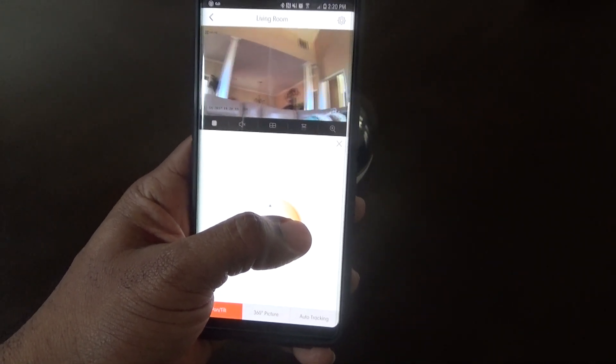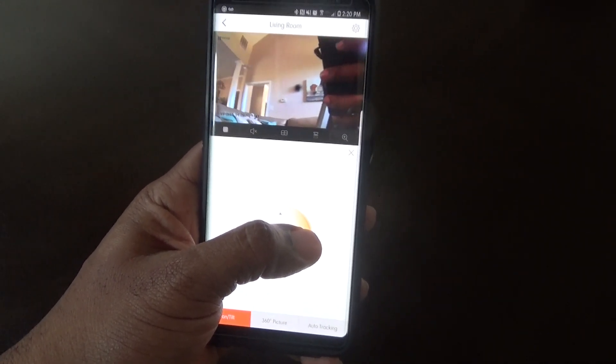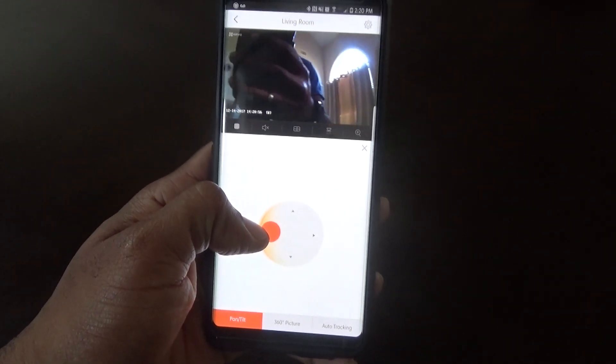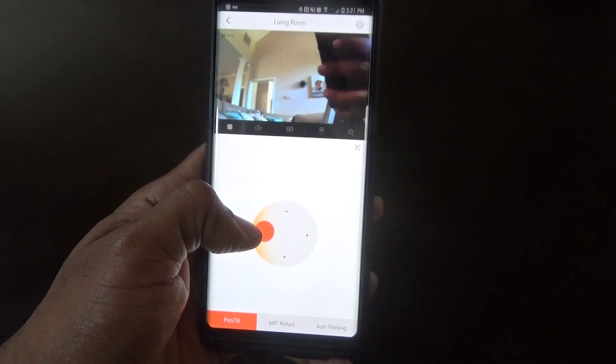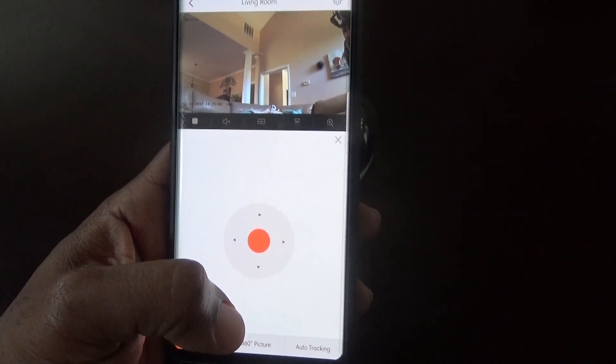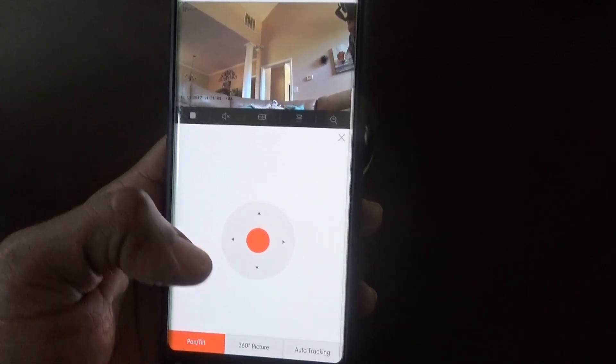Now this actually works wherever you are. So if you're at work and want to look in on your house, if you're at the park looking at your house, if you're on vacation and want to look in on your house, this is the way to go. You can circle the whole room and see everything that's going on anywhere in the house at any time.